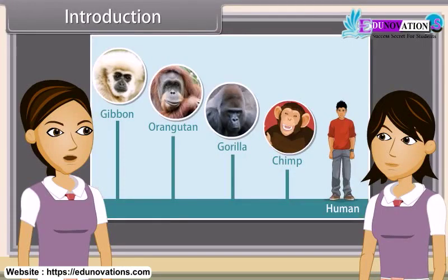Hey Sunita, look at this chart. What can you observe from this chart? It depicts that human, chimpanzee, gorilla and other two animals possess some similarities and differences.